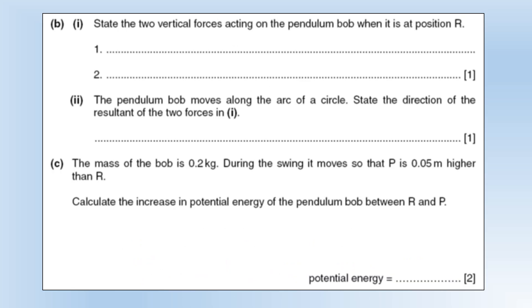State the two vertical forces acting on the pendulum when it's at position r. So the first one to recognize has got its weight force acting downwards. But there's also going to be a tension force upwards which is stopping it falling and keeping it in a circular arc.